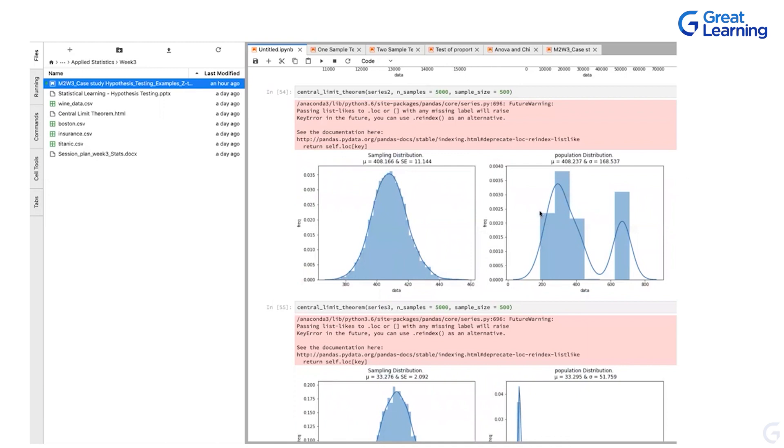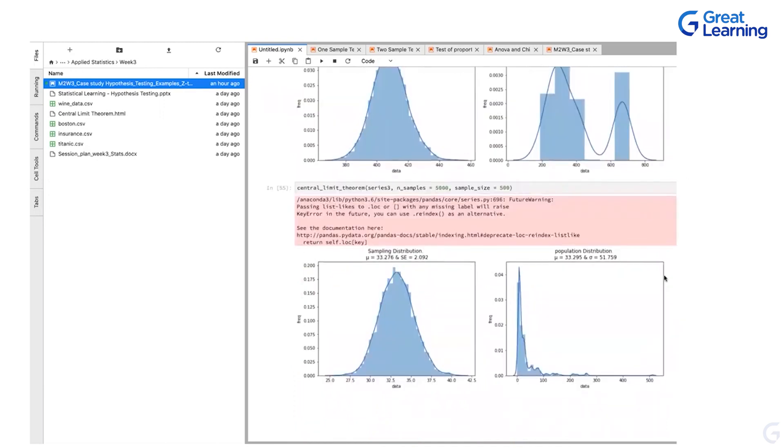Again, the mean is normally distributed, and your population is bimodal, essentially. And you take this one. This is very, very right skewed distribution, very thin distribution happening. Despite all that, you see your mean distribution is normally distributed. Is this making sense, folks? What central limit theorem actually means? This is a demonstration of central limit theorem primarily.